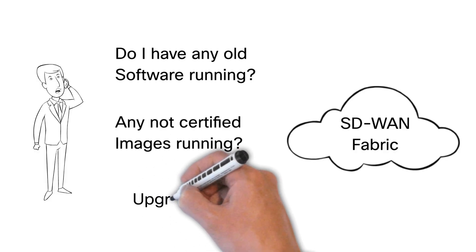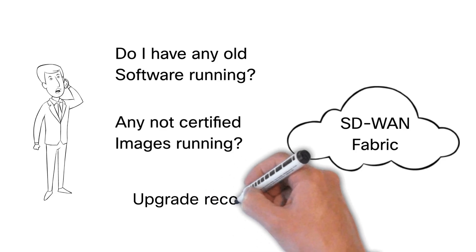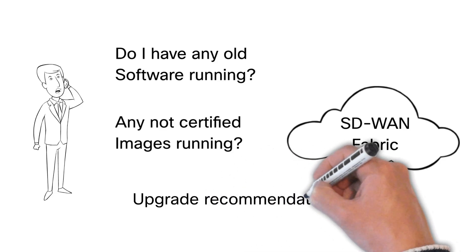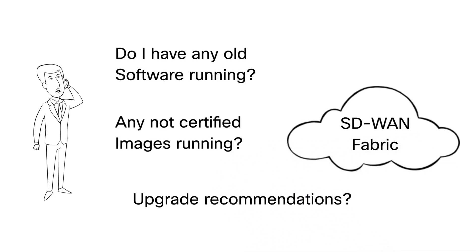Nick doesn't want to write automation code for this. He used AI to create a Docker image for a custom model context protocol server for his Catalyst SD-WAN networks, which will do all the tasks for him.